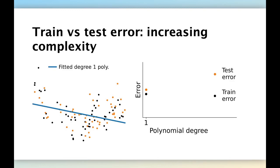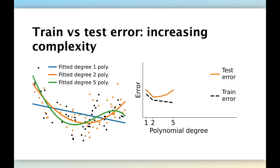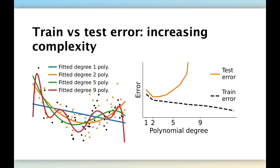Now let's fit a second model, a degree two polynomial. Here you see we get a quadratic curve which better fits the overall shape of the data, and therefore both errors decrease because it fits the shape of both the test and train data. If we keep increasing complexity by fitting a degree nine polynomial, you see that the train error still decreases — the model is more and more able to go close to the black data points — but then it starts to memorize noise elements from those black data points that do not generalize to the orange data points, and therefore the test error starts to go up.